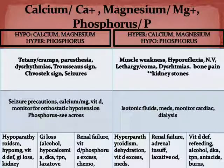The signs and symptoms of too much calcium and magnesium with too little phosphorus (high CM, low P) are: muscle weakness, hyporeflexia, nausea and vomiting, lethargy, coma, dysrhythmias, bone pain, and with calcium specifically, kidney stones. So low CM/high P causes muscles to be excited and overworking, while high CM/low P causes weakness with decreased reflexes.